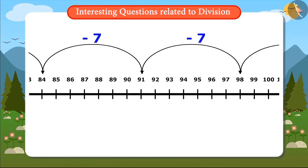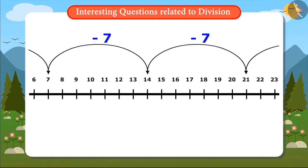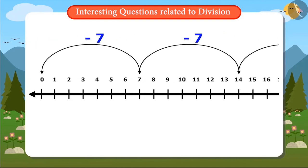Likewise, I will keep subtracting 7 on this number line till I reach the figure 0. So once I reach the digit 0, that will mean all my pocket money is spent.